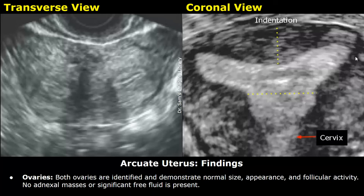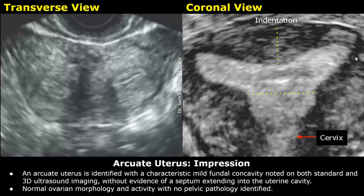Both ovaries are normal. This is the impression: an arcuate uterus is identified with a characteristic mild fundal concavity noted on both standard and 3D ultrasound imaging, without evidence of a septum extending into the uterine cavity. Normal ovarian morphology and activity with no pelvic pathology identified.